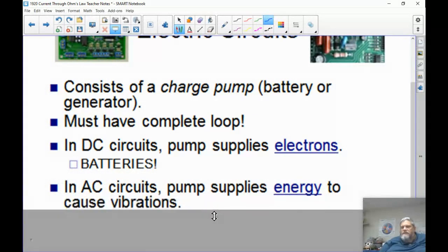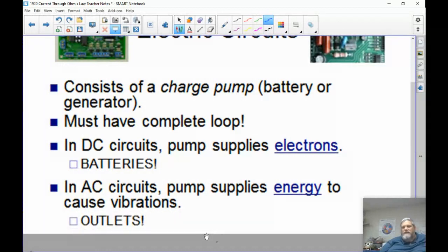In AC circuits, the pump supplies the energy to cause vibrations, and the electrons really just go back and forth in the wire. They don't go anywhere, they just move back and forth. That's why it's called alternating current. We get AC current from outlets, things that we plug in, power plants and such.